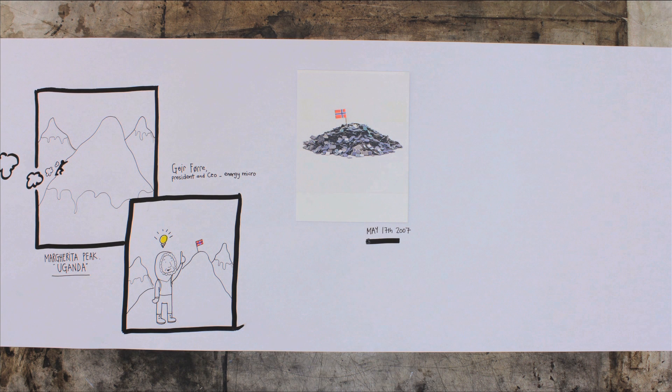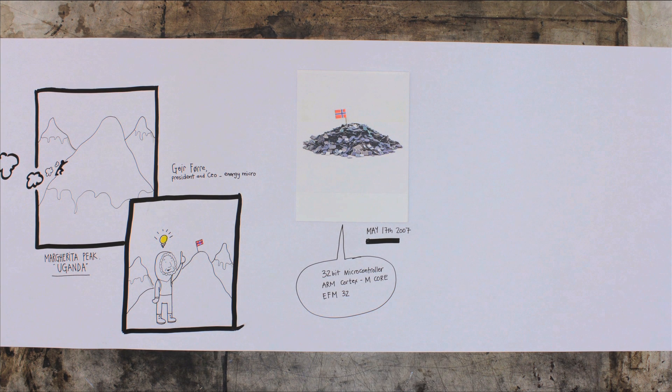Energy Micro was born on May 17, 2007, on the National Day of Norway. I began to plan for ultra-low power applications: the world's most energy-friendly 32-bit microcontrollers based on an ARM Cortex-M core. We called it the EFM32.